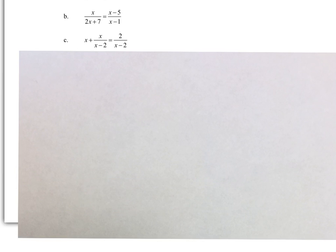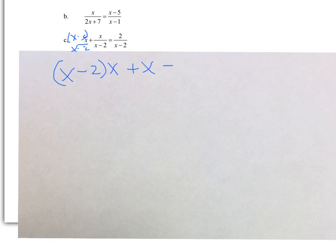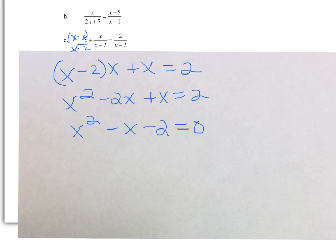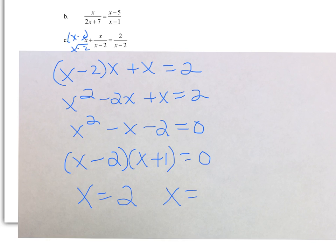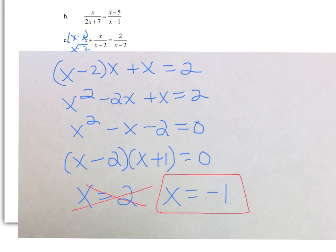And lastly for C, because we have an adding problem on the left, I'm going to give everything a common denominator. Once everything has a common denominator, I can equate the numerators and simplify. Subtracting 2 to the left and factoring gives X equals 2 and X equals negative 1. But checking our answers, when we substitute 2 back in, it makes the denominator 0, so it's extraneous. X equals negative 1 is the only answer.